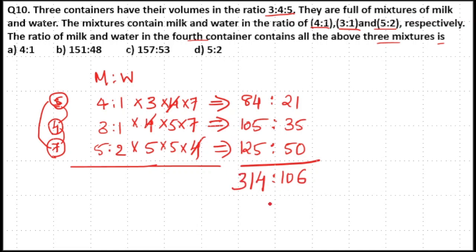So 314:106. When you divide both by 2: 314÷2=157 and 106÷2=53. So the final ratio is 157:53. Option C is your answer.